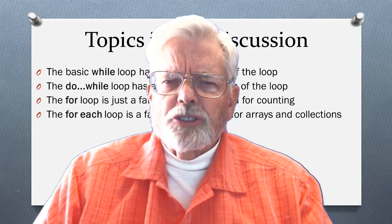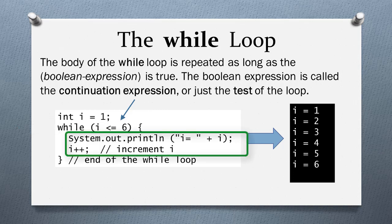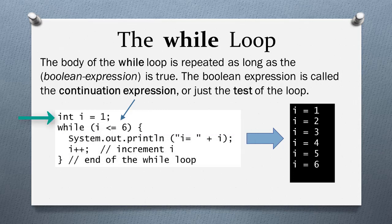Let's get started with the while loop. The while loop starts off with the word 'while' followed by a boolean expression inside a set of parentheses that must evaluate to true or false. As long as the expression evaluates true, the body of the loop is executed. In this example, the variable i is initialized to 1. The while loop will execute the body of the loop as long as i is less than or equal to 6.